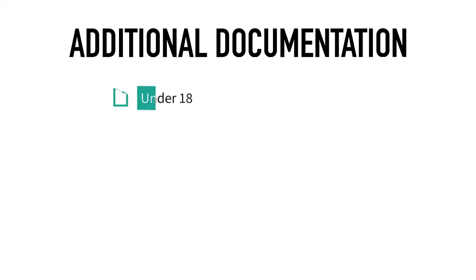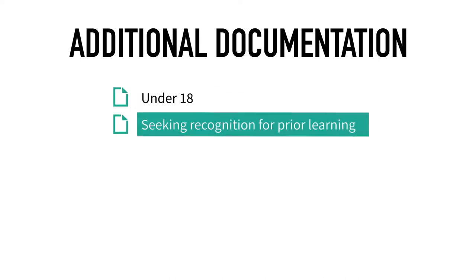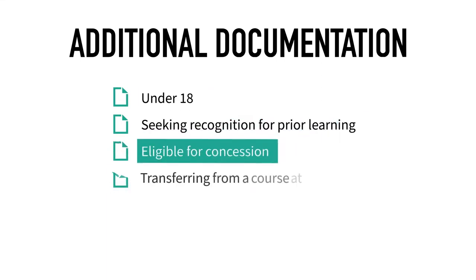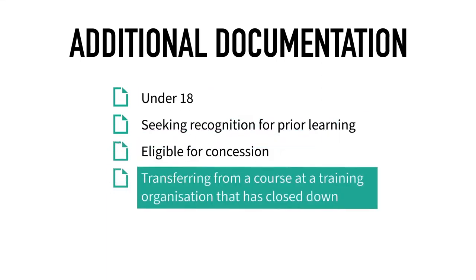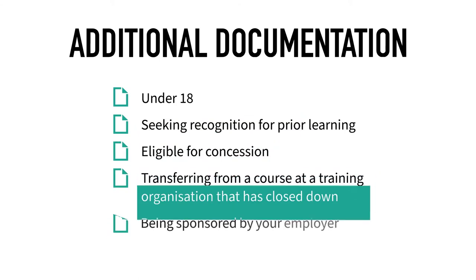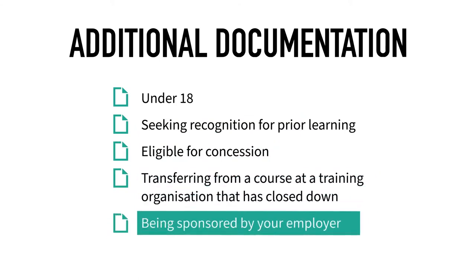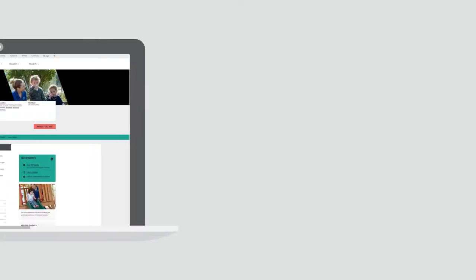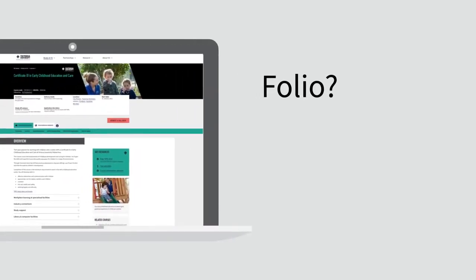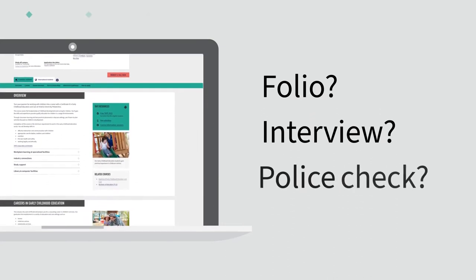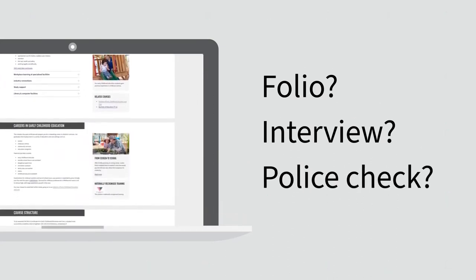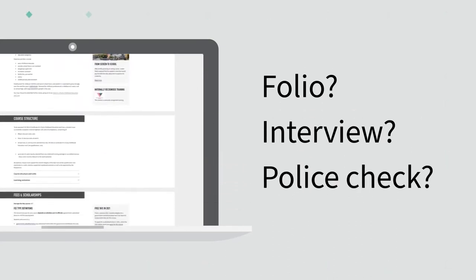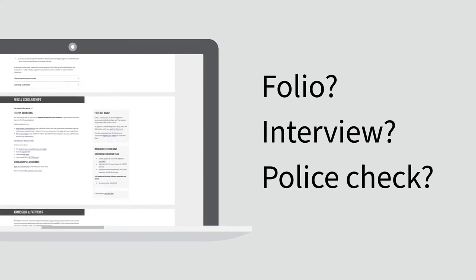You will be asked to provide additional documentation depending on whether you are under 18, seeking recognition for prior learning, eligible for concession, transferring from a course at a training organisation that has closed down, or being sponsored by your employer. Documents relating to your concession status will need to be certified. You will also need to provide any documents, checks or verification of completed assessments listed as entry requirements for your course. Make sure you check your course page for any additional requirements.